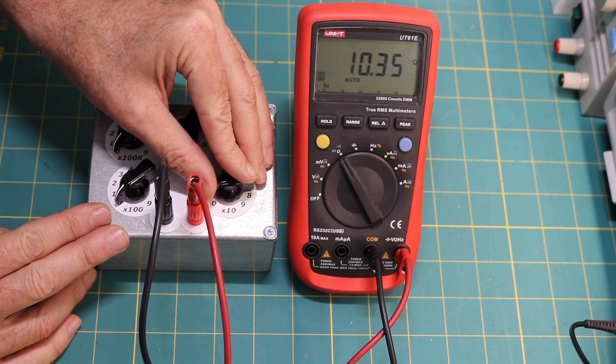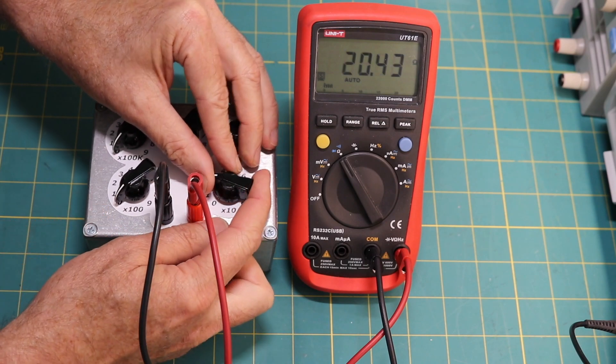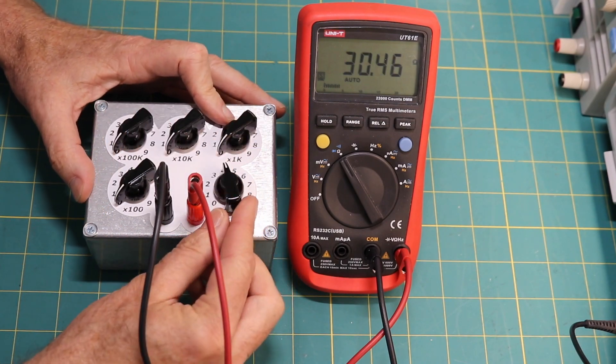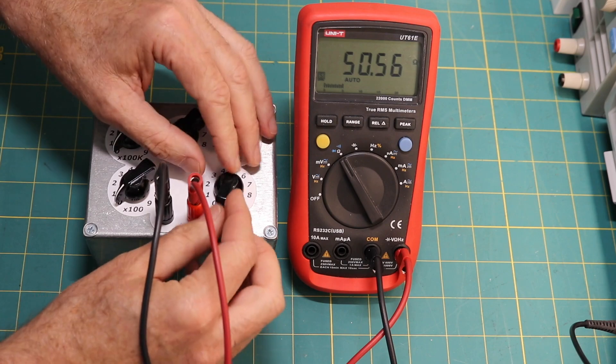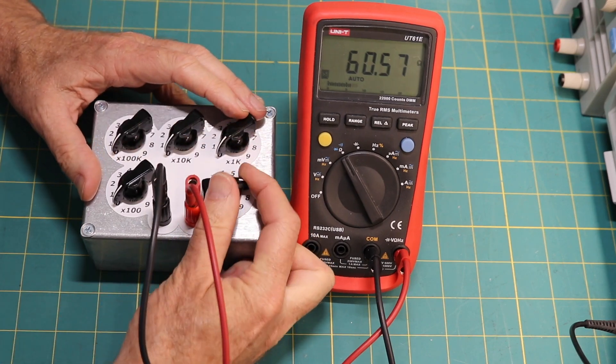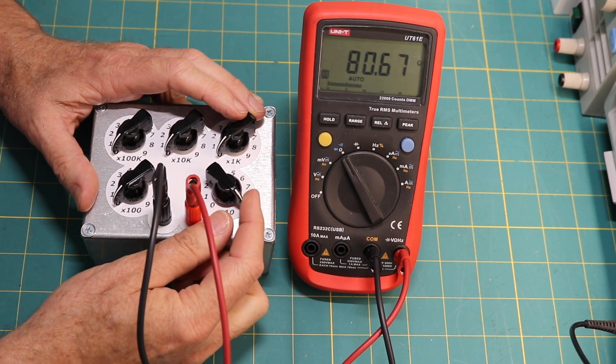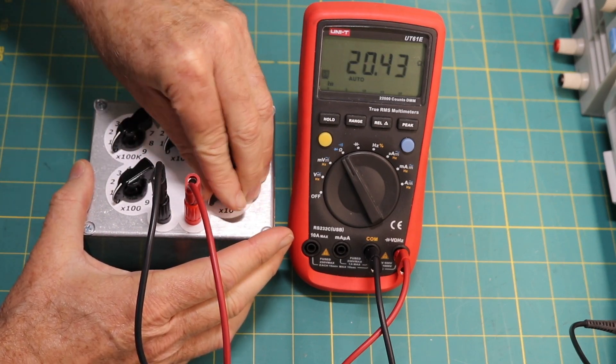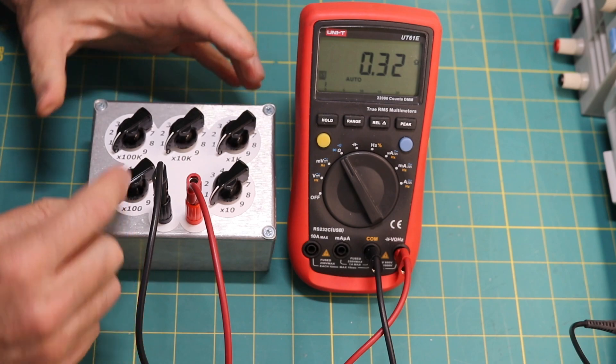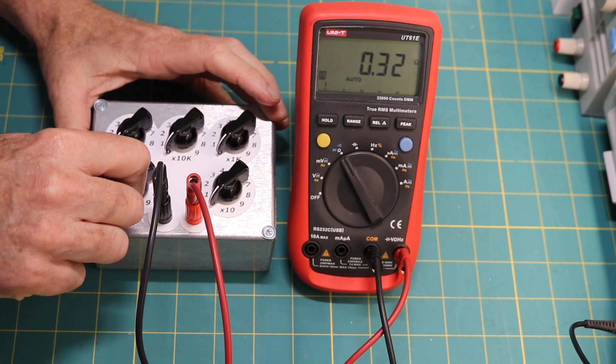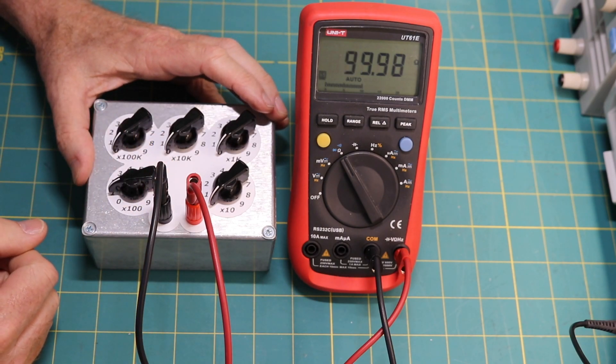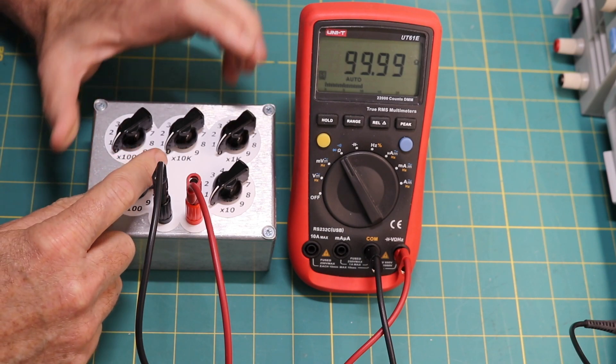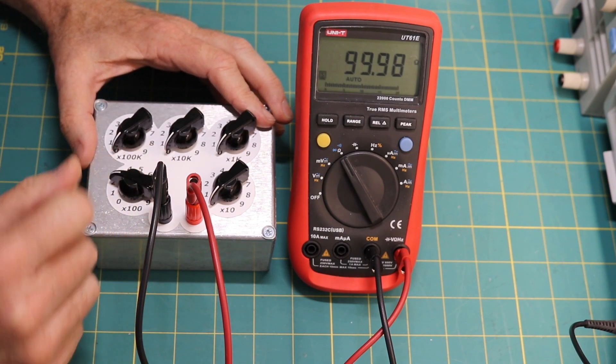Here's 10 ohms, 20 ohms, 30, 40, 50, 60, 70, 80, 90, 100. So we could be here literally for days if I wanted to test every possible combination, but we'll just test a couple. There's 100 ohms, 99.9, pretty good.